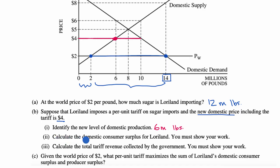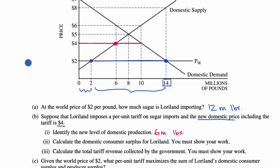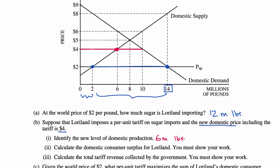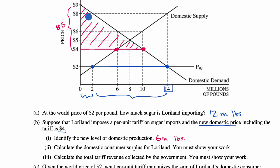Part two: calculate the domestic consumer surplus for Loreland — you must show your work. The domestic consumer surplus, with the new price of $4, is the area above the price line and below the domestic demand curve. That is a triangle with a width equal to the quantity demanded of 10 million pounds, and a height from $4 to $9, which is $5. We multiply by one half because it's a triangle, not a full rectangle.